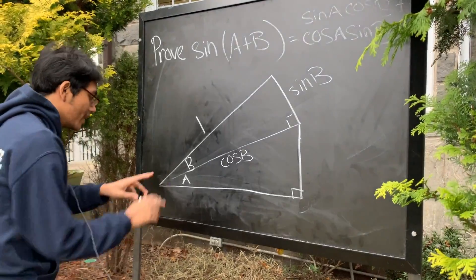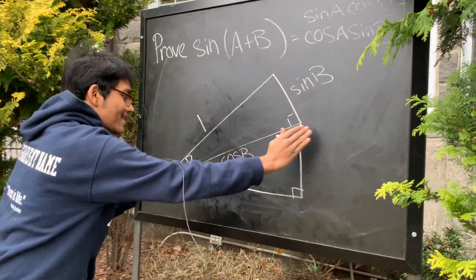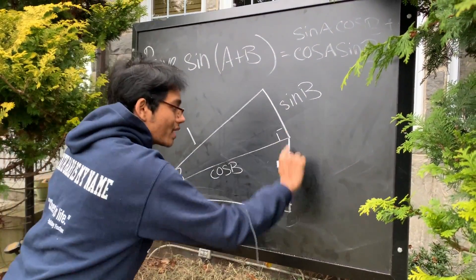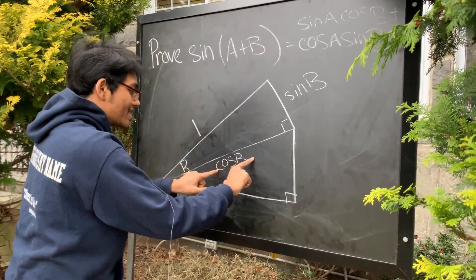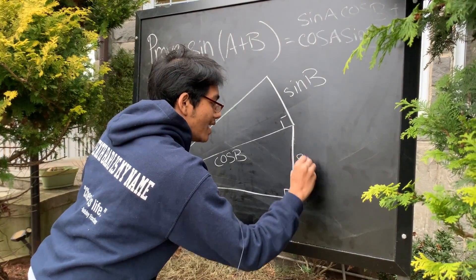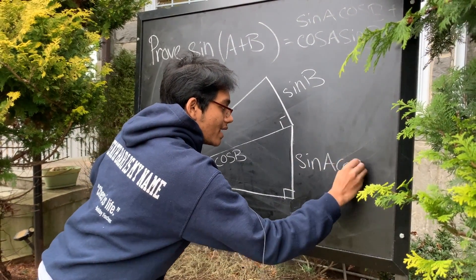Okay, well, now we can keep going. Since this angle is A and this hypotenuse is cosine of B, well, what can we say about this leg? Well, this is simply going to be sine of this angle times the hypotenuse. So sine of A, cosine of B.